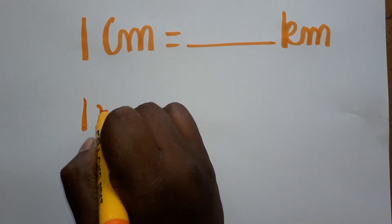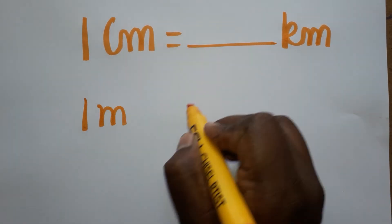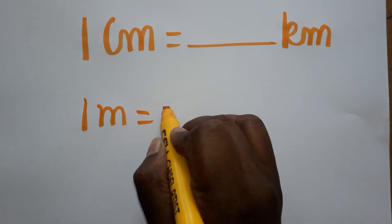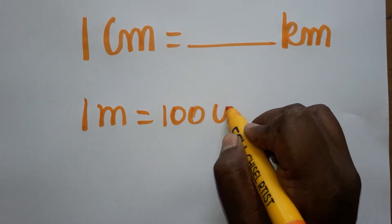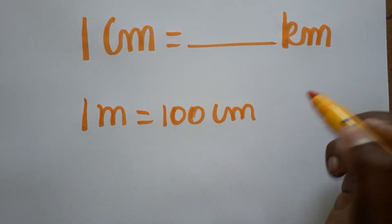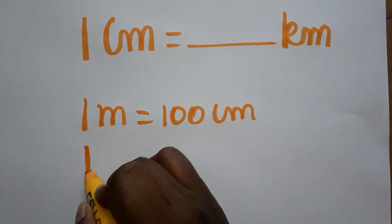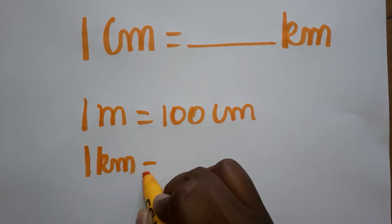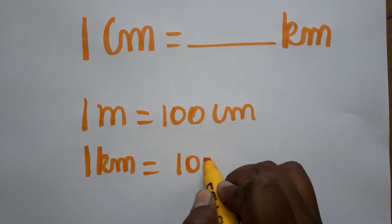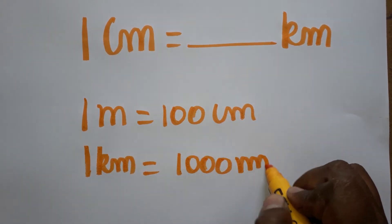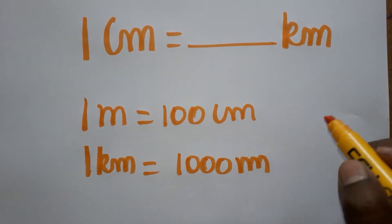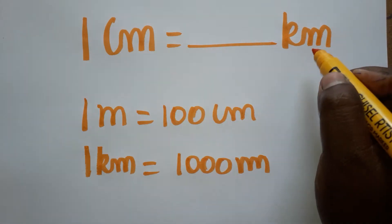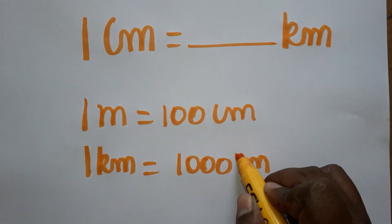First, let me relate the units. One meter is equal to one hundred centimeters, and one kilometer is one thousand meters. Now our goal is the relation from centimeter to kilometer — that is what we are going to find.